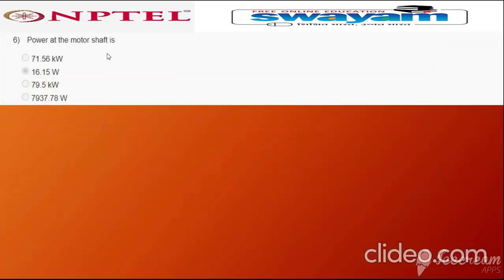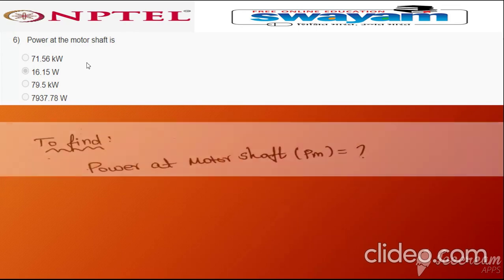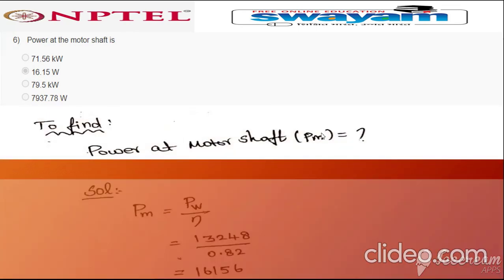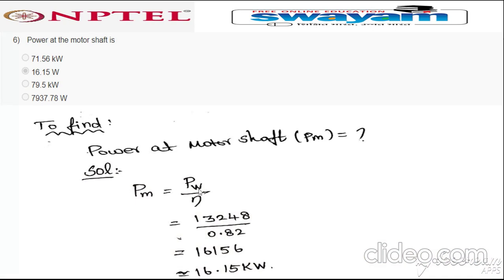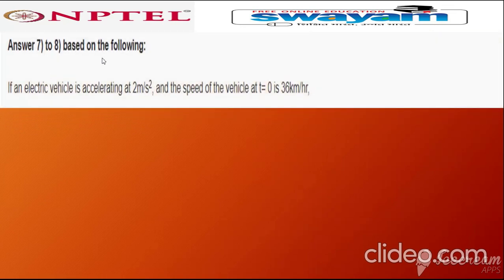Question six: power at motor P_m = P_w / η. Using P_w = 13000 W and efficiency η = 0.82, we get approximately 16152 W. Converting to kilowatts gives 16.15 kW. The correct answer is option two: 16.15 kW. Note: the option mistakenly lists the unit as watts, but the correct unit is kilowatts.